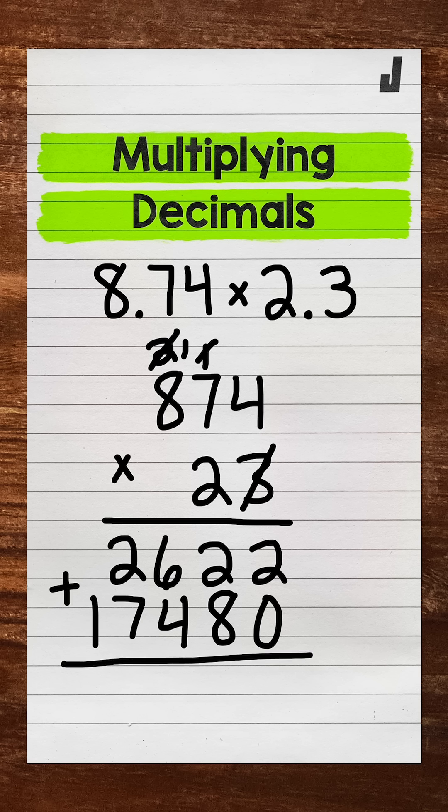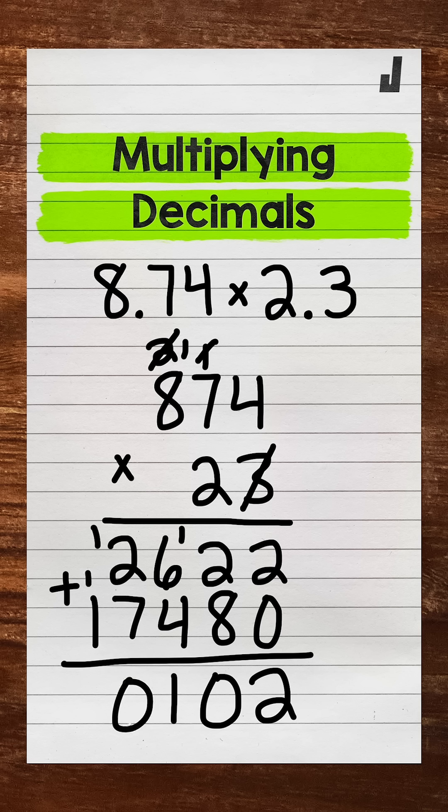Now we add. 2 plus 0 is 2. 2 plus 8 is 10. 1 plus 6 is 7, plus 4 is 11. 1 plus 2 is 3, plus 7 is 10. And then 1 plus 1 is 2.